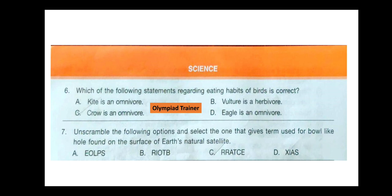Question 7. Unscramble the following options and select the one that gives the term used for a bowl-like hole found on the surface of Earth's natural satellite. Earth's natural satellite is the Moon, and bowl-like holes found on the Moon are called craters. Option C is the correct answer.